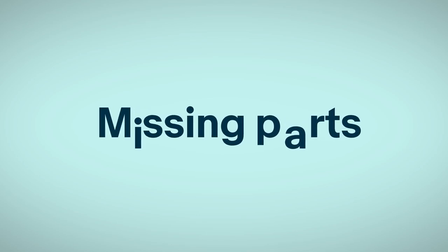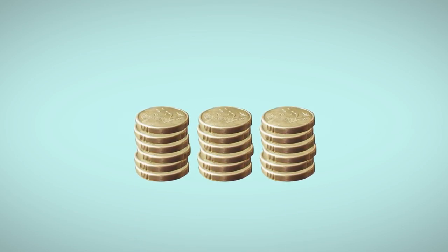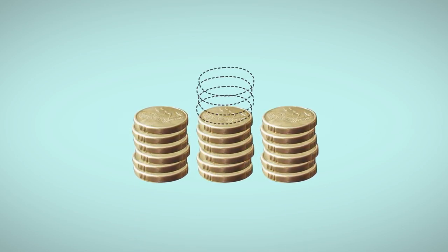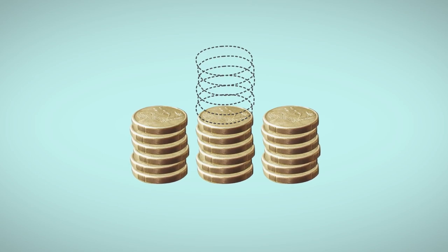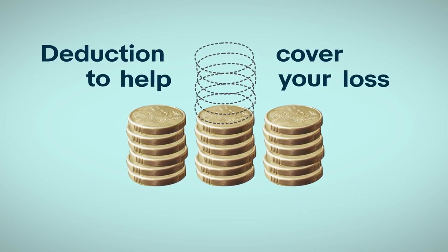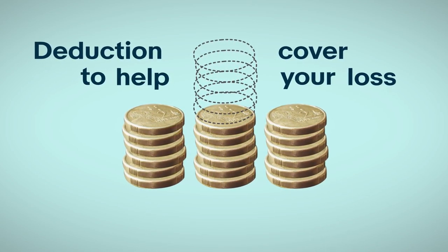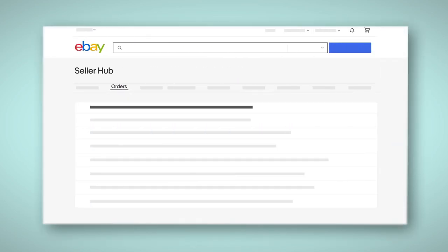Was an item returned used, damaged, or missing parts? If so, you can choose to only issue the buyer with a partial refund and deduct up to 50% from the refund to recover the lost value of the item. Here's how to do it.